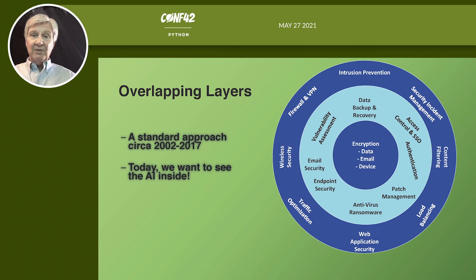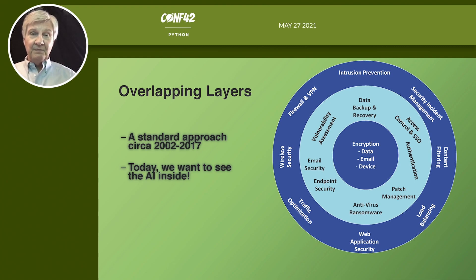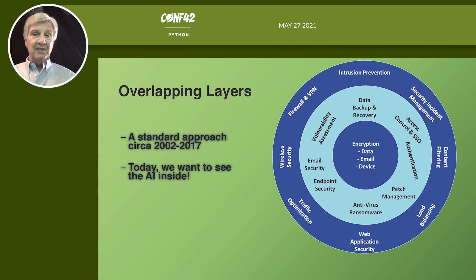As a programmer, you may not be directly involved in all layers, but web application security and traffic optimization are areas where you can contribute. We have overlapping layers for a reason — for example, with email, we may have three or four different pieces of software or hardware devices that touch an incoming message, each doing different things. If one layer misses a bad actor, one of the others will catch it.